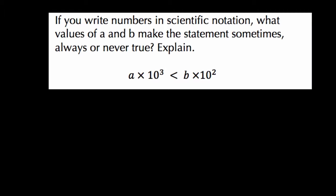Okay, so the key to understanding this question is that we're dealing in scientific notation. Our numbers are guaranteed to be written in that form. They tell us that here, and they say, what values of A and B will make this statement sometimes, always, or never true? Explain.